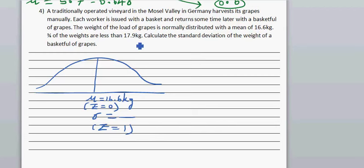Where would this 19.7 kg come? Would it come to the left or right? That's pretty easy. If this is 16.6, then 17.9 kg would come to the right. They are saying three quarters of the weights are less than 17.9.